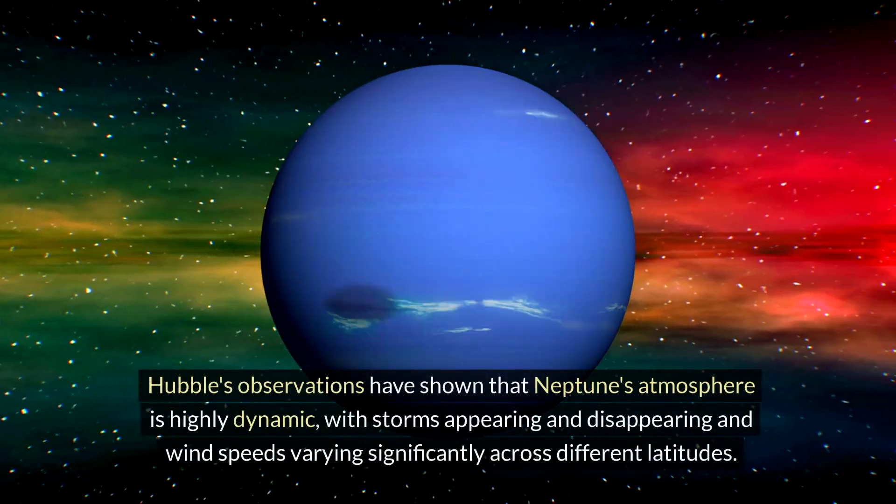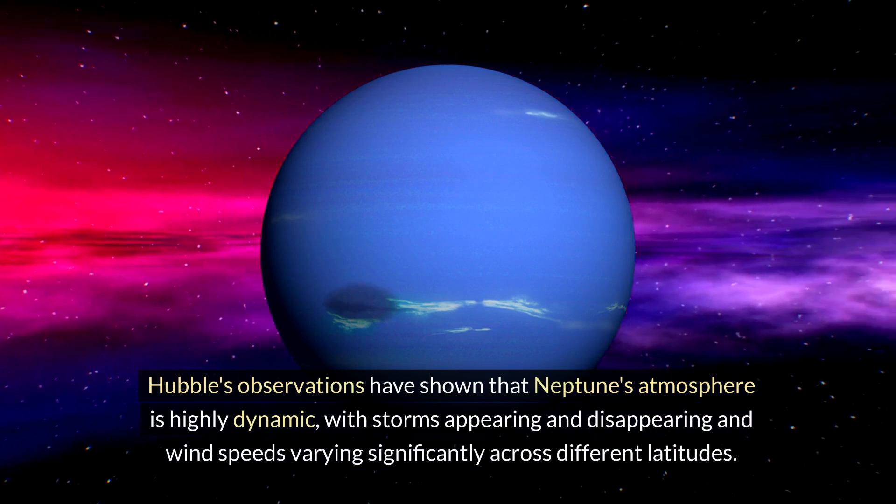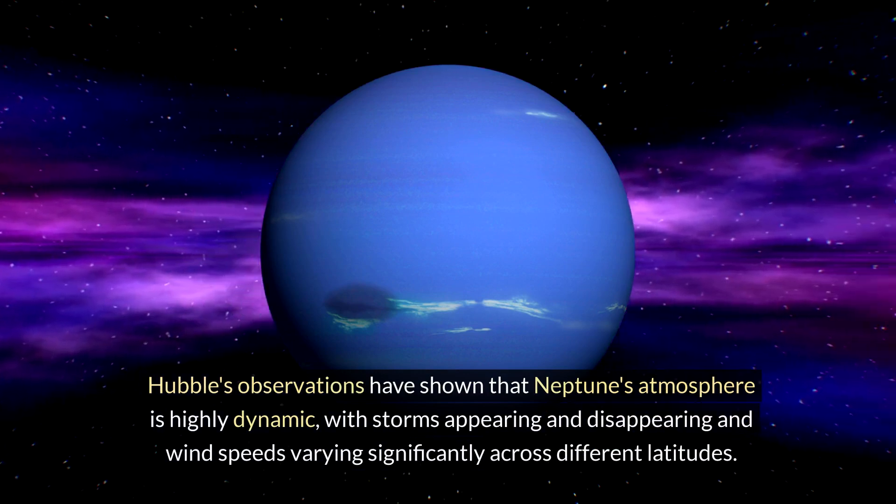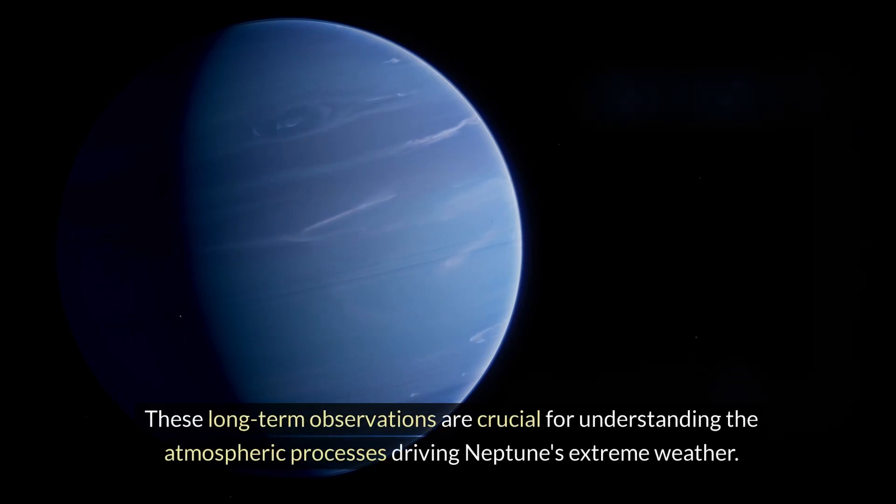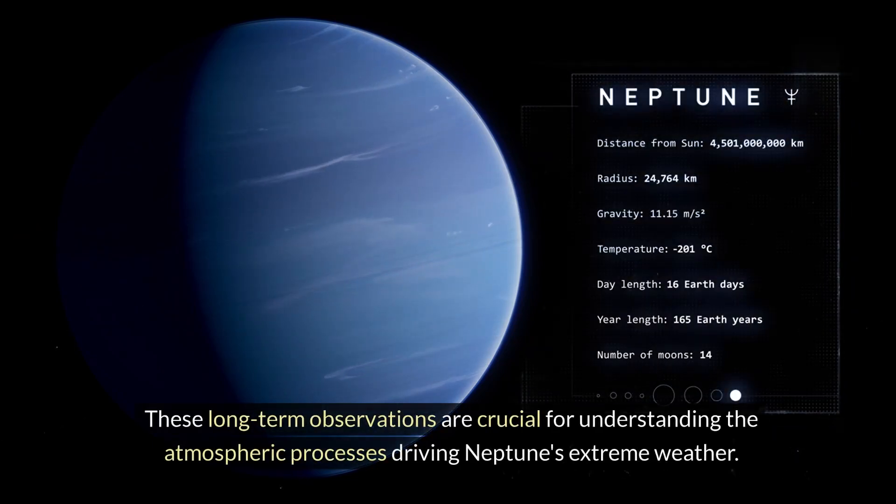Hubble's observations have shown that Neptune's atmosphere is highly dynamic, with storms appearing and disappearing and wind speeds varying significantly across different latitudes. These long-term observations are crucial for understanding the atmospheric processes driving Neptune's extreme weather.